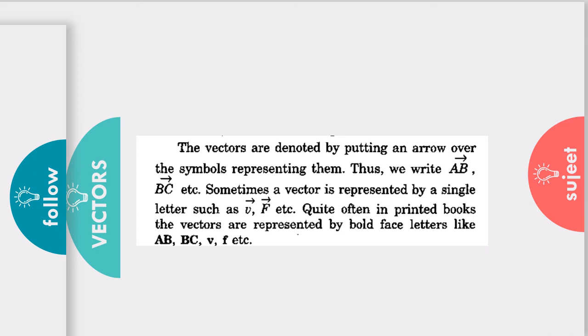And with this, you can also understand there are certain books which follow the convention by darkening it. So, hopefully, you have understood how to symbolize a vector. Are you okay?